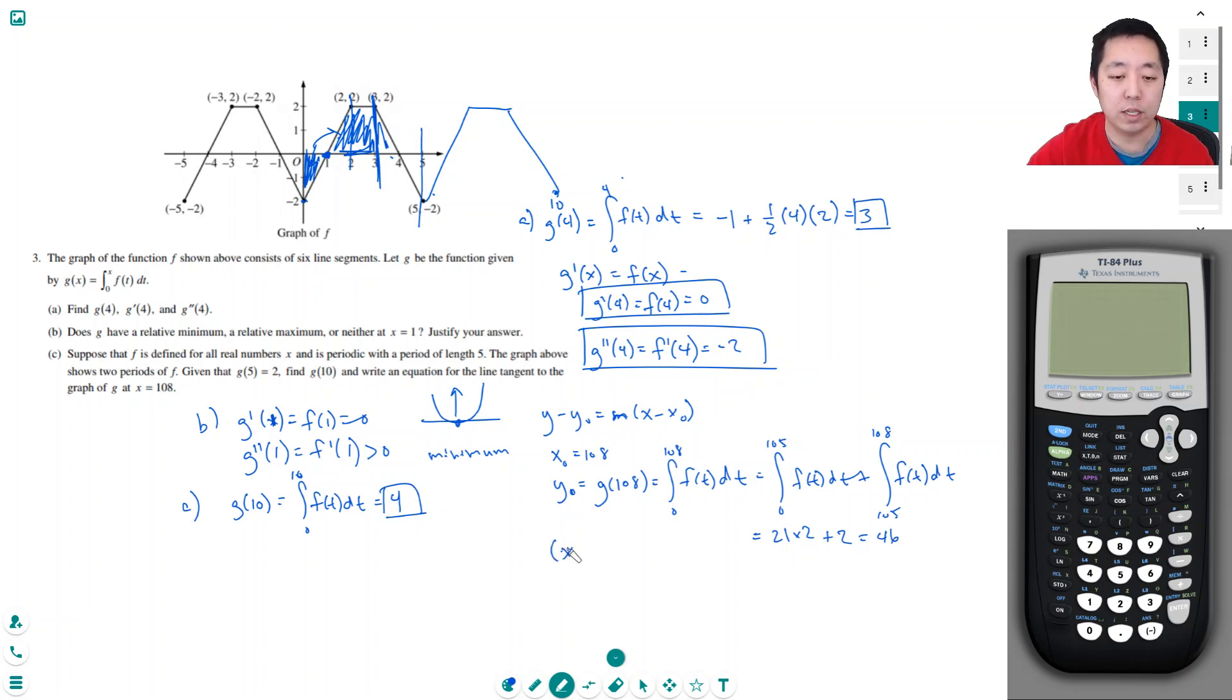So my point is going to be 108 comma 44. Now I need the slope because it's a tangent, I just need the derivative at 108, and that's equal to just f at 108. Similar to before, at 105 it repeats every 5, so I subtract that 105. This is equal to f of 3 because it's periodic, so f of 3 is equal to 2, so the slope is 2.